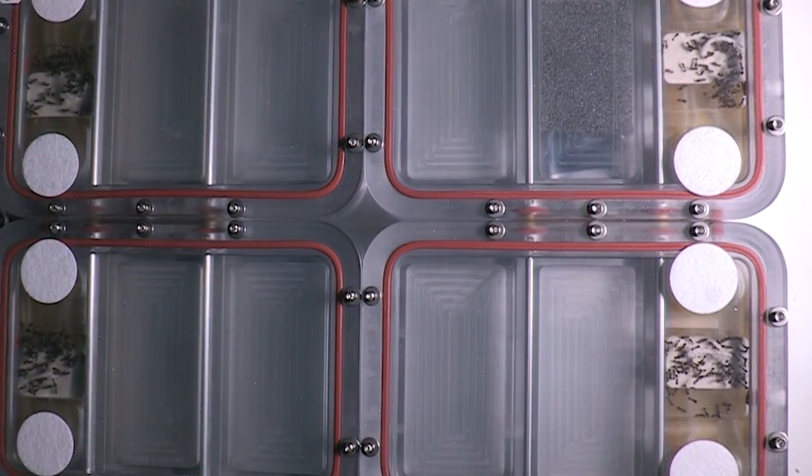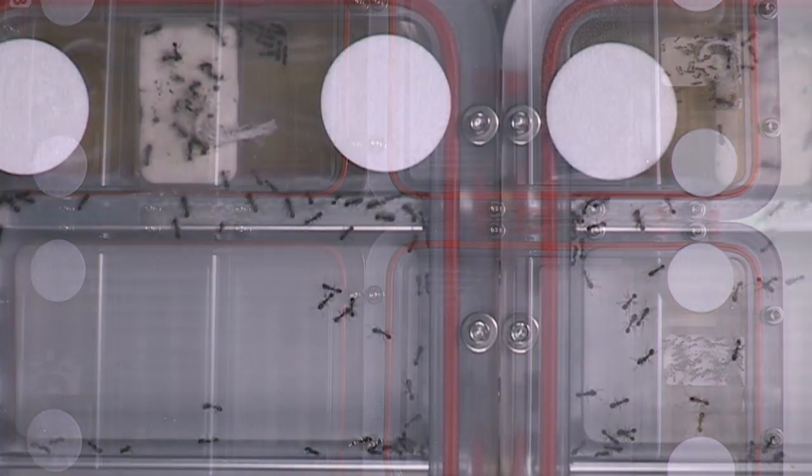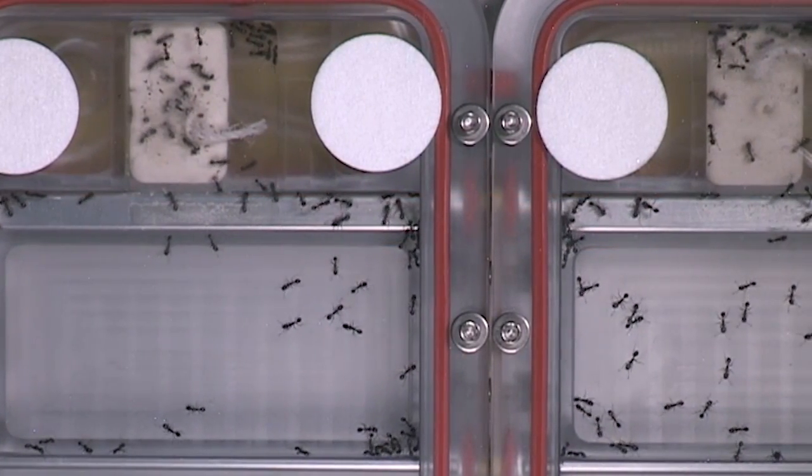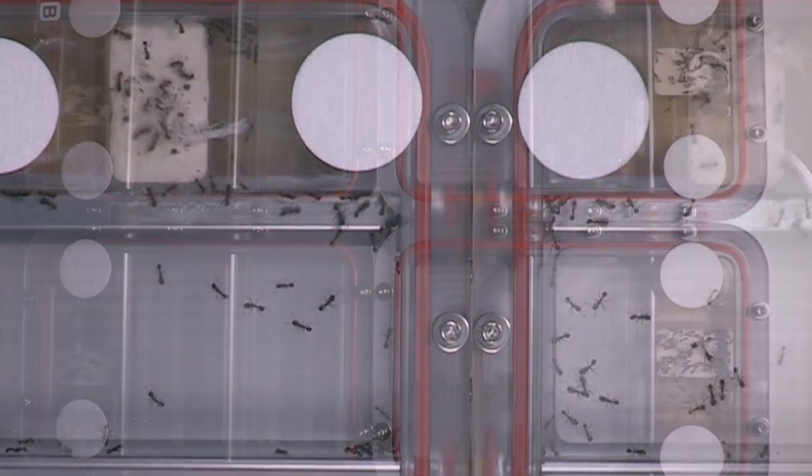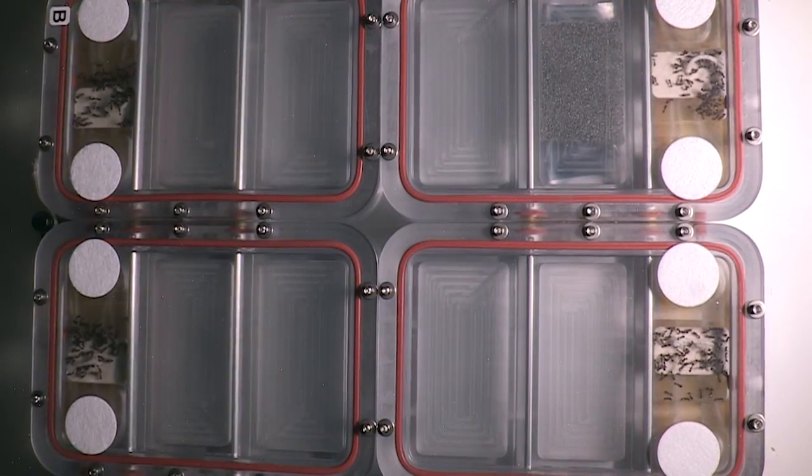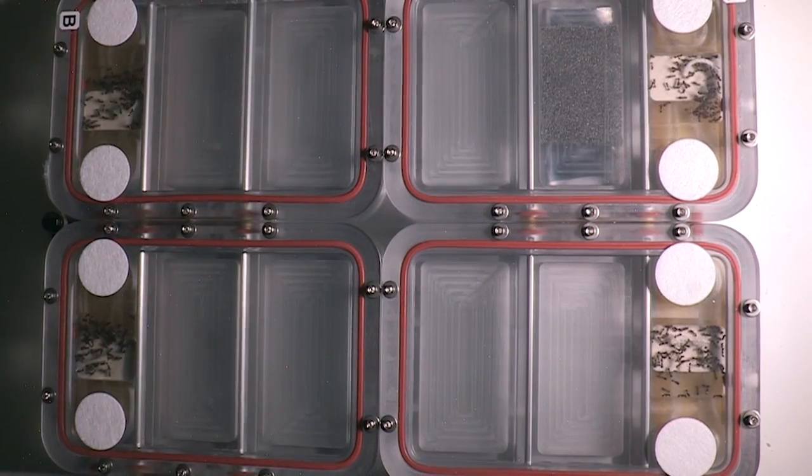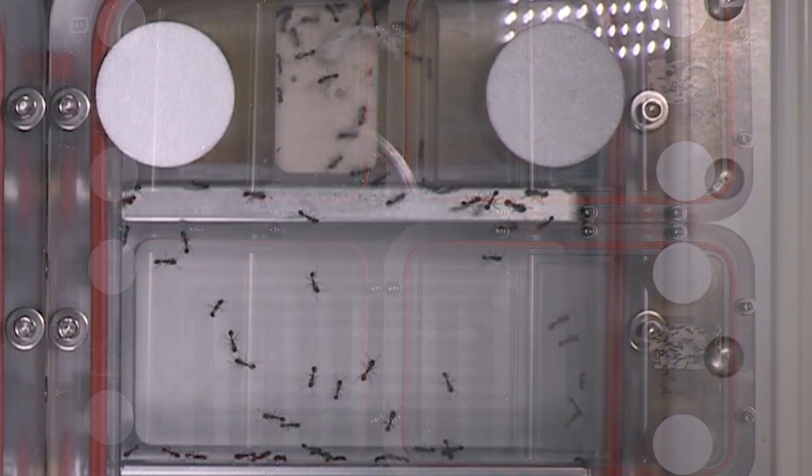And these ants typically are in colonies with one queen and up to 10,000 worker ants. And those worker ants, a lot of what they do is forage. And their behavior as they do that foraging is one of the things we're going to be looking at in this experiment.